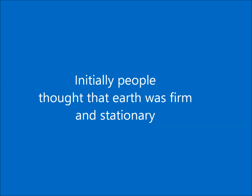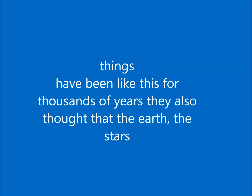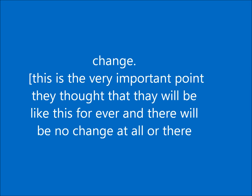Initially, people thought that the earth was firm and stationary — for thousands of years, centuries, they believed that, and that all other objects went around it. Since things had been like this for so long, they also thought that the earth, the stars, and the sun had been like this forever and would remain like this forever, without any change.